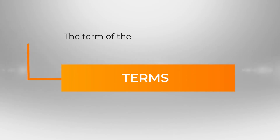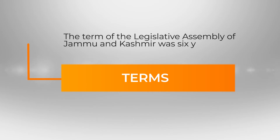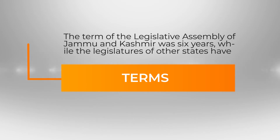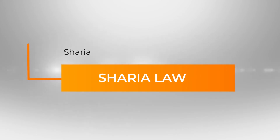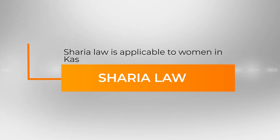The term of the Legislative Assembly of Jammu and Kashmir was six years, while the legislatures of other states have a term of five years. Additionally, Sharia law is applicable to women in Kashmir.